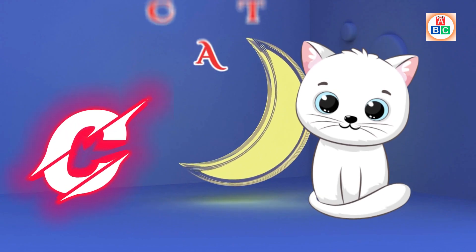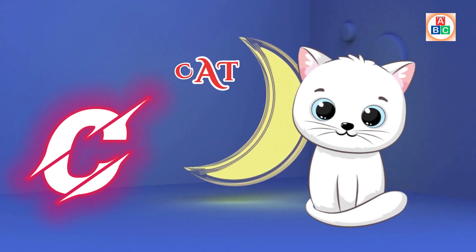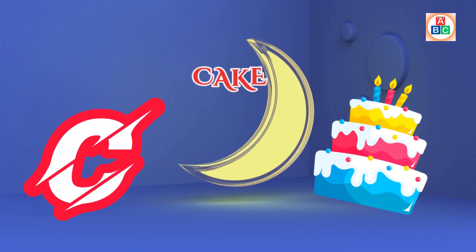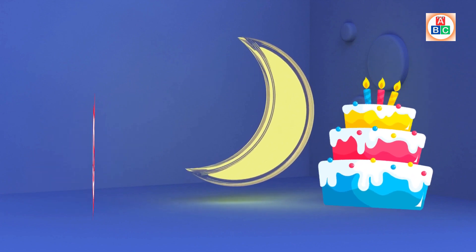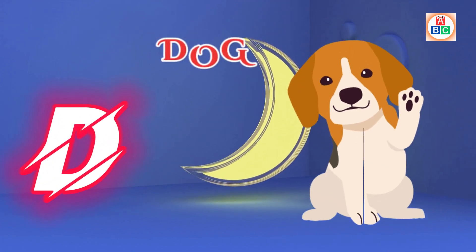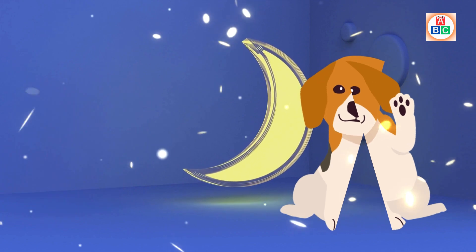C is for Cat. C, C, Cat. C is for Cake. C, C, Cake. D is for Dog. D, D, Dog.